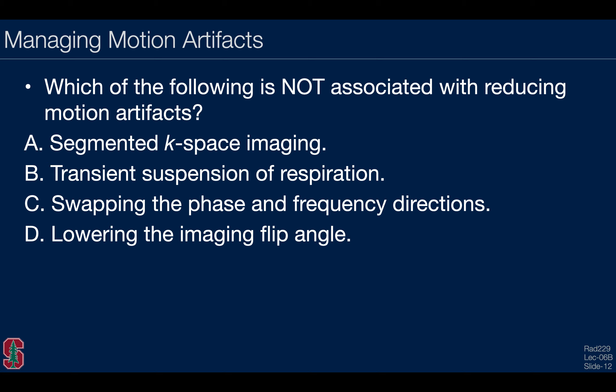Here's a quick quiz: which of the following is not associated with reducing artifacts? Is it segmented K-space imaging, transient suspension of respiration, swapping the phase and frequency directions, or lowering the imaging flip angle? We don't expect that lowering the imaging flip angle will have a significant impact on imaging artifacts per se. But segmented K-space synchronized to the cardiac cycle is helpful; suspending respiration mitigates respiratory motion-induced artifacts; and swapping the phase and frequency encoding directions can reduce artifacts substantially.